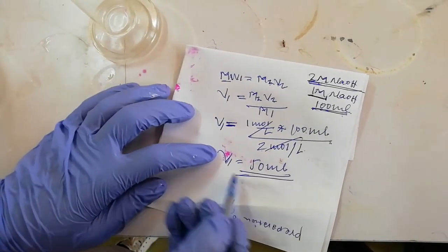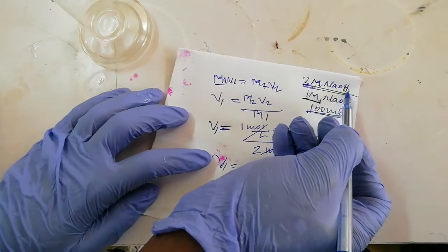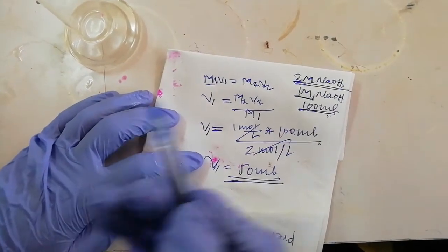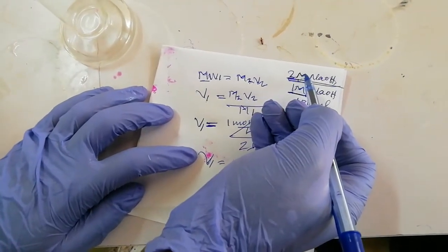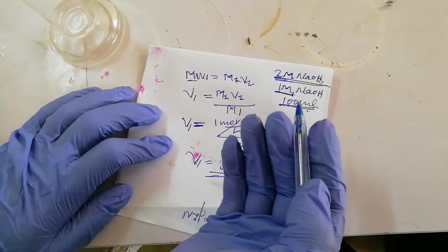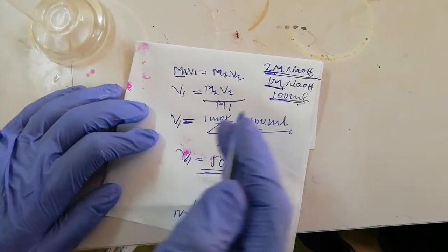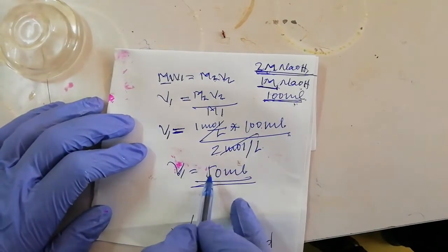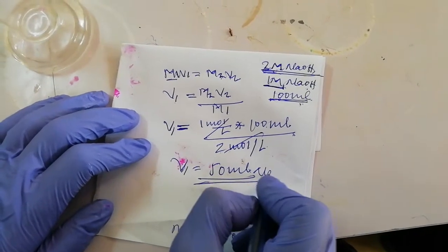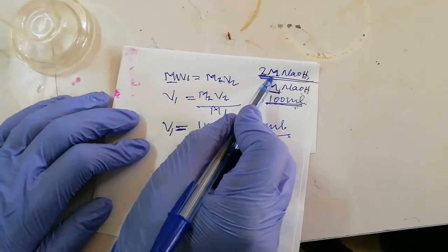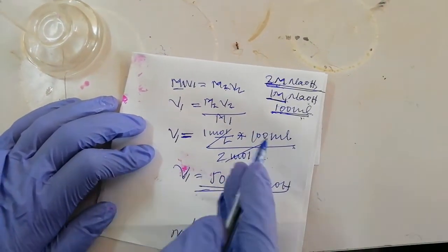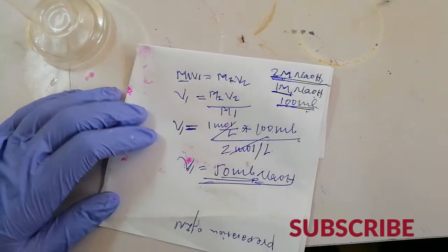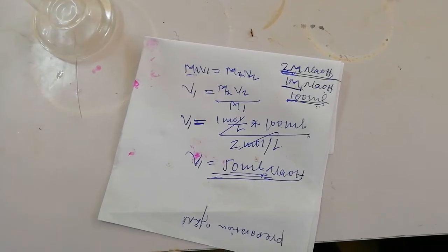We are going to reduce 2-molarity sodium hydroxide solution to 1-molarity — that is why we call it dilution. Dilution means preparation of a less concentrated solution from a highly concentrated one. We are going to dilute 2-molarity sodium hydroxide to 1-molarity sodium hydroxide. So we take 50 mL of the 2-molarity sodium hydroxide solution, add it into a beaker or conical flask, then add 50 mL of water. Its concentration is now reduced from 2-molarity to 1-molarity.